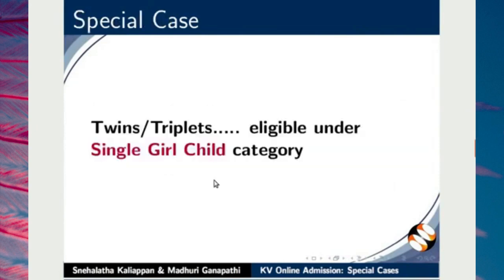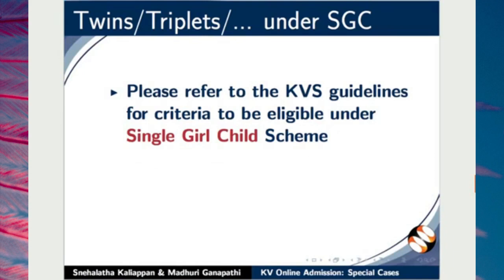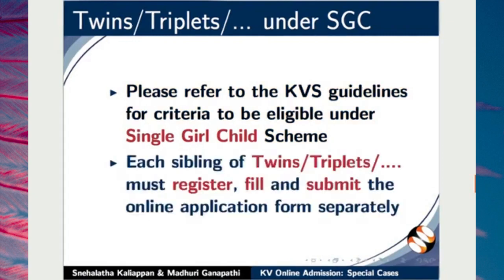Let me demonstrate with a special case — twins, triplets, quadruplets or similar siblings applying under single girl-child category. Please refer to the KVS guidelines for criteria to be eligible under single girl-child scheme. Each sibling of twins, triplets, quadruplets or similar siblings must register, fill and submit the online application form separately.